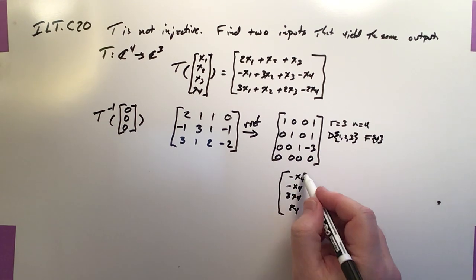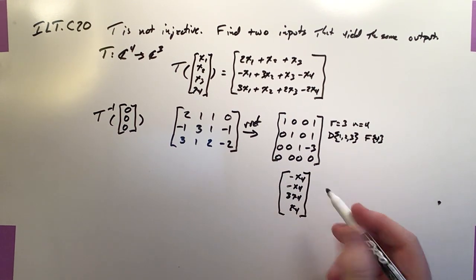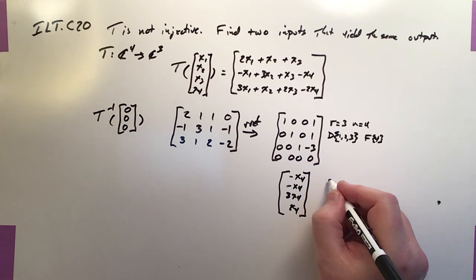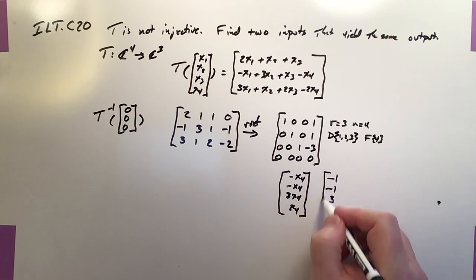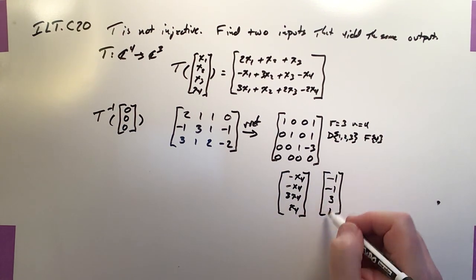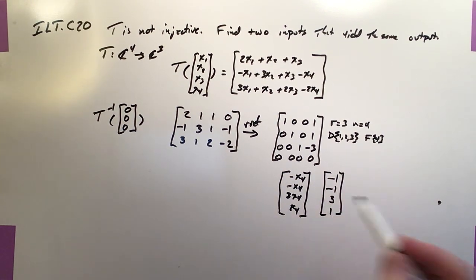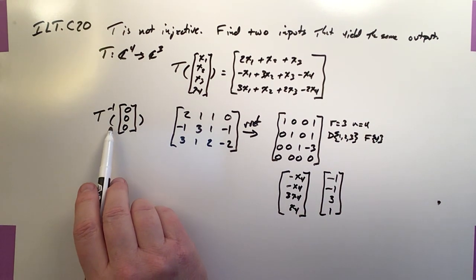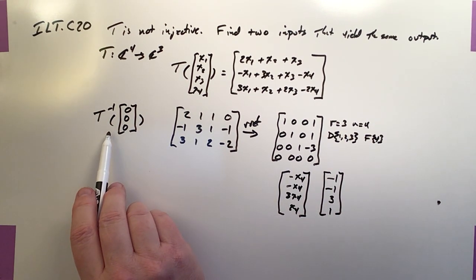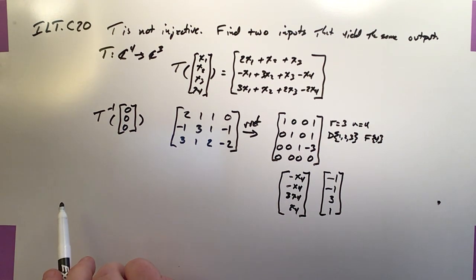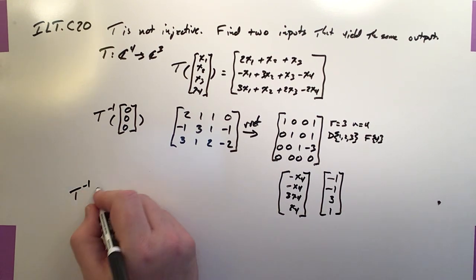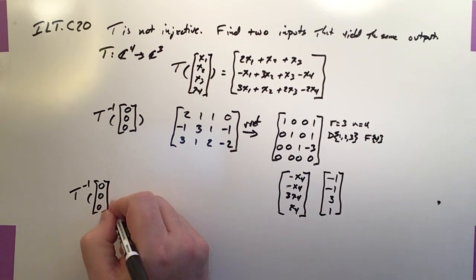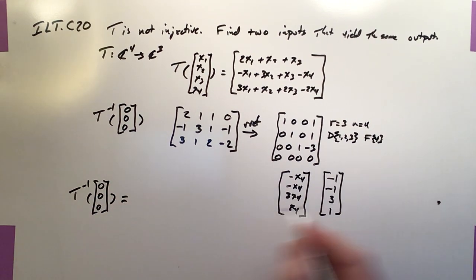So this would be the spanning set. Let's take the X4 out of there. And it really turns into negative 1, negative 1, 3, 1. And basically any span of this guy right here would be in the pre-image. It would basically be one whose input would produce this as its output. And they asked for two of them. So if T minus 1 of 0, 0, 0.